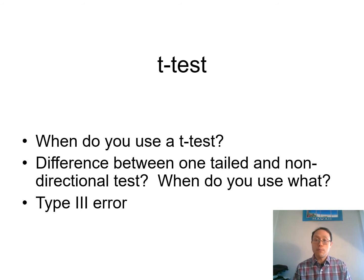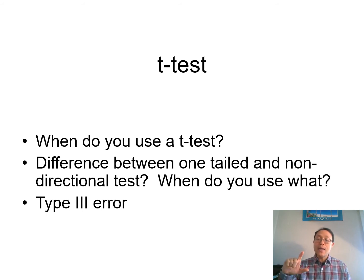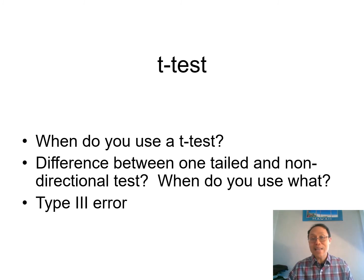When you only know that reaction time will be different but don't know if it's going to be faster or slower, that's when you use a non-directional test. A one-directional test is more powerful, but it can also give you a type three error — when you correctly state that there is a difference between two groups but you state the directional difference wrong. You correctly identified that group A differs from group B, but you stated the wrong direction.